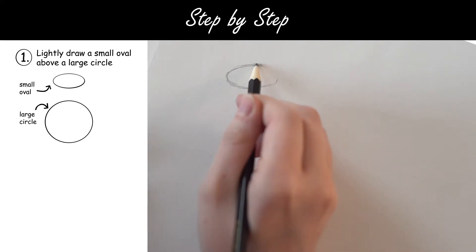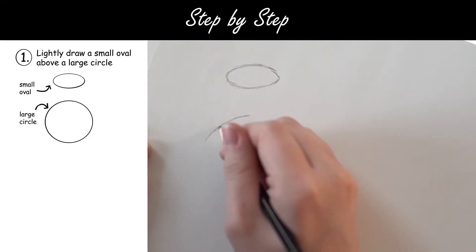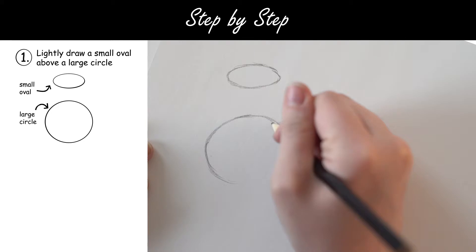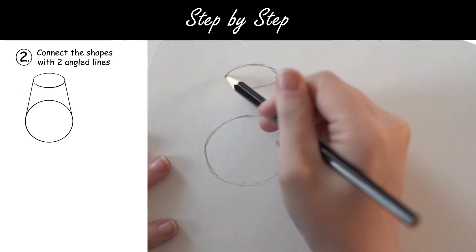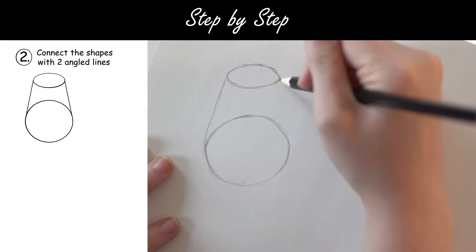Step 1. Lightly draw a small oval above a large circle. Step 2. Connect the shapes with two angled lines.